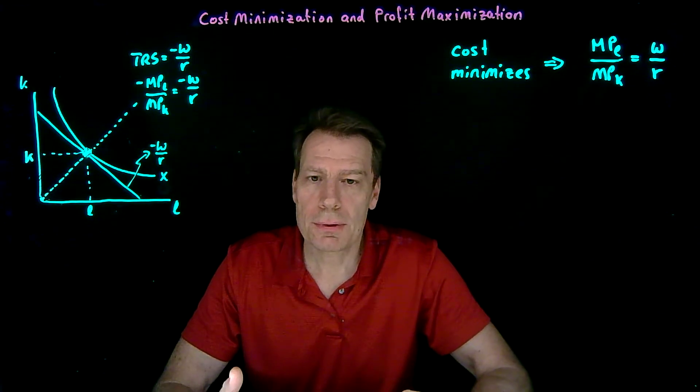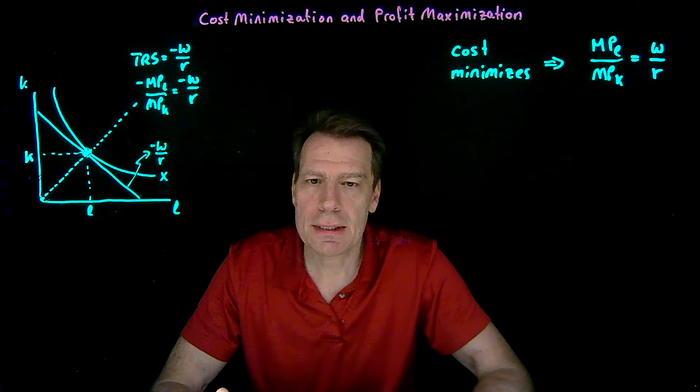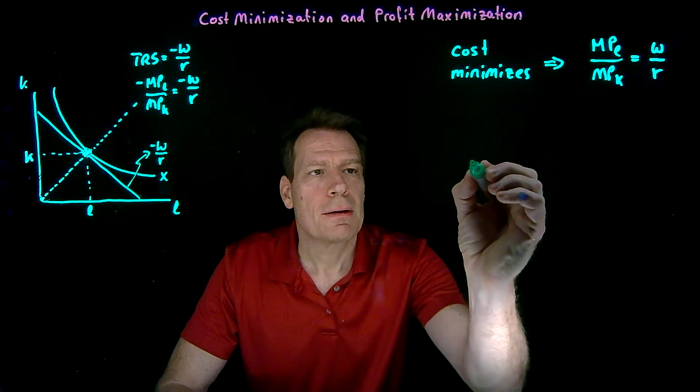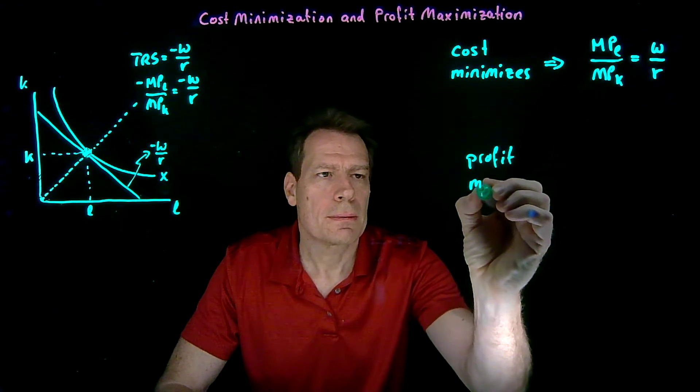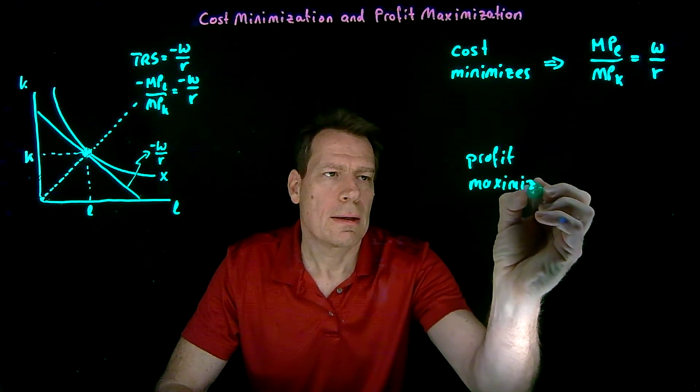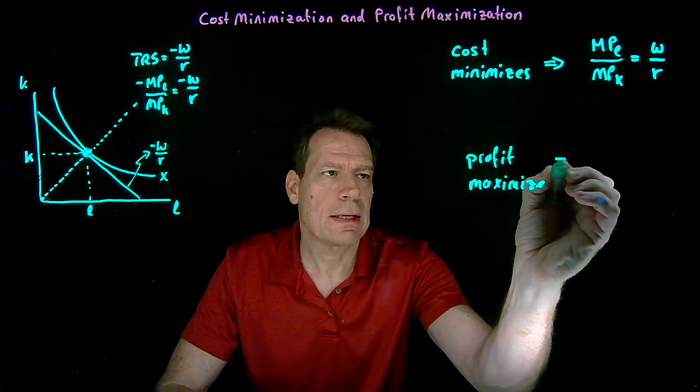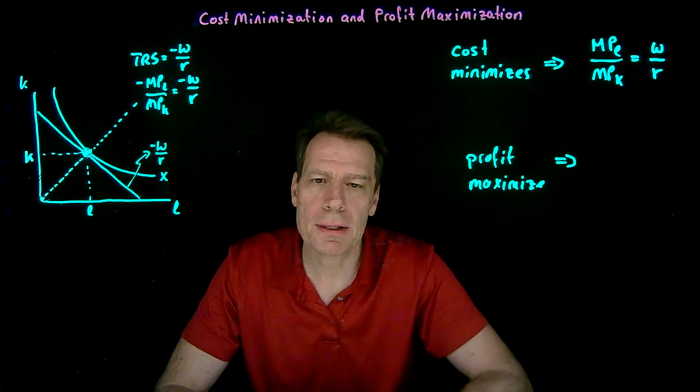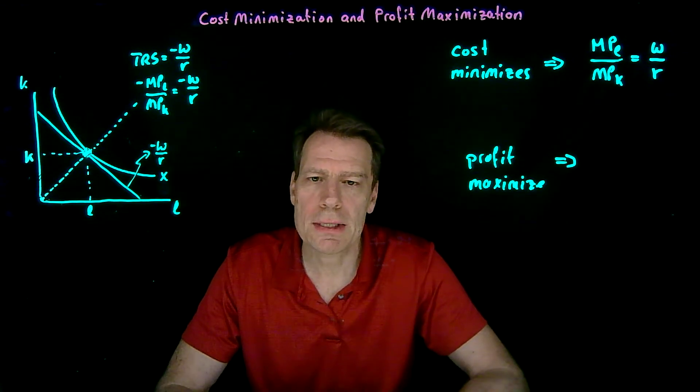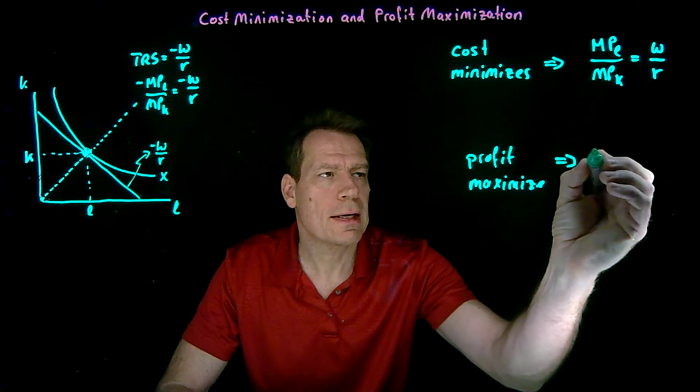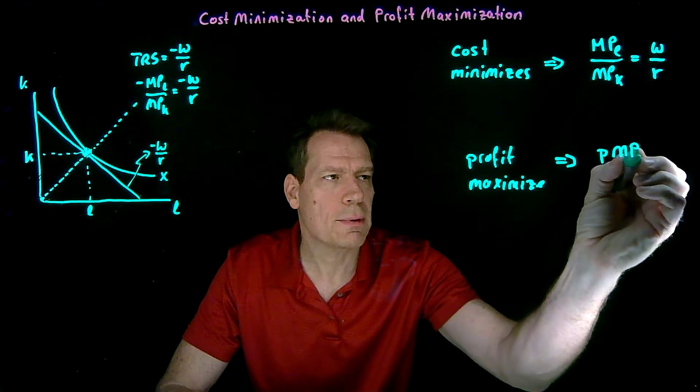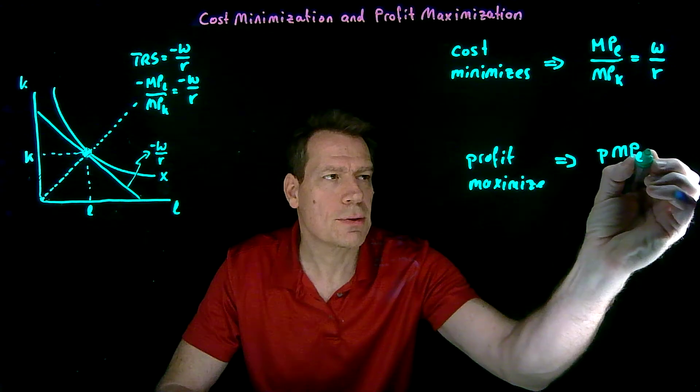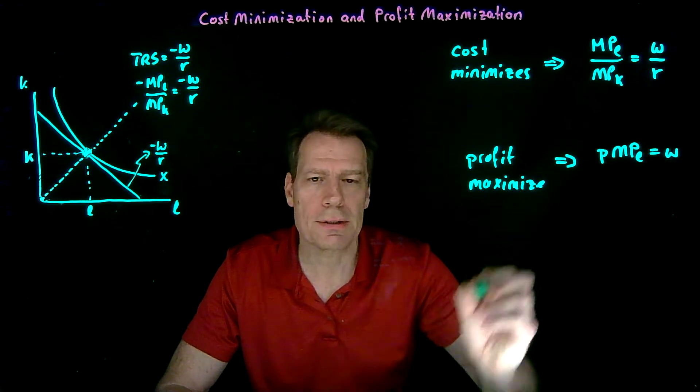But when we first did profit maximization in a single step, we said that when firms profit maximize, they will hire capital and labor until their marginal revenue products are equal to their input prices. In other words, they'll hire labor so long as the price times the marginal product of labor is greater than the wage, so they'll hire workers until that's equal to the wage.